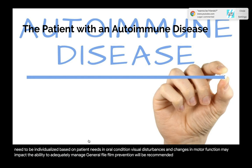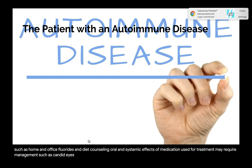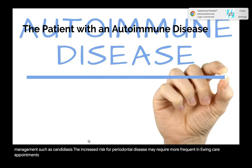Prevention will be based on risk for oral disease, such as home and office fluorides and diet counseling. Oral and systemic effects of medications used for MS treatment may require management, such as candidiasis. The increased risk for periodontal disease may require more frequent continuing care appointments, particularly if the patient is having issues with motor function.